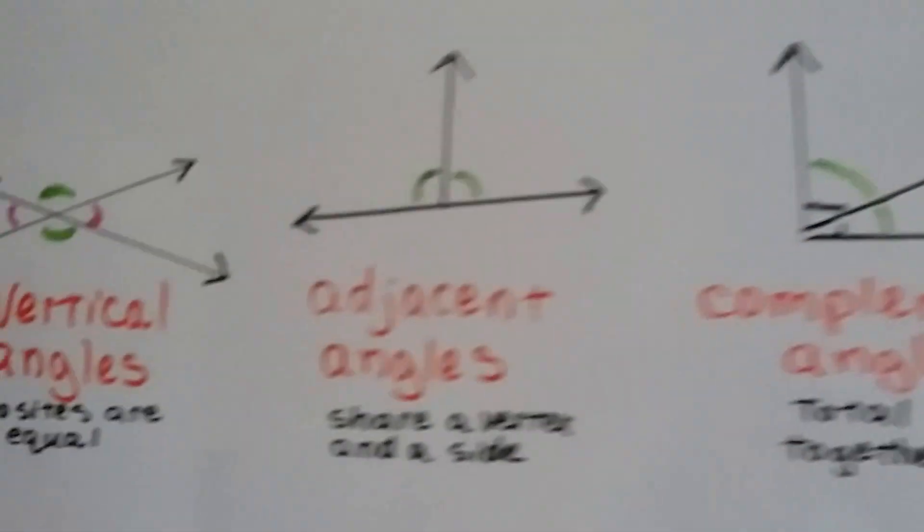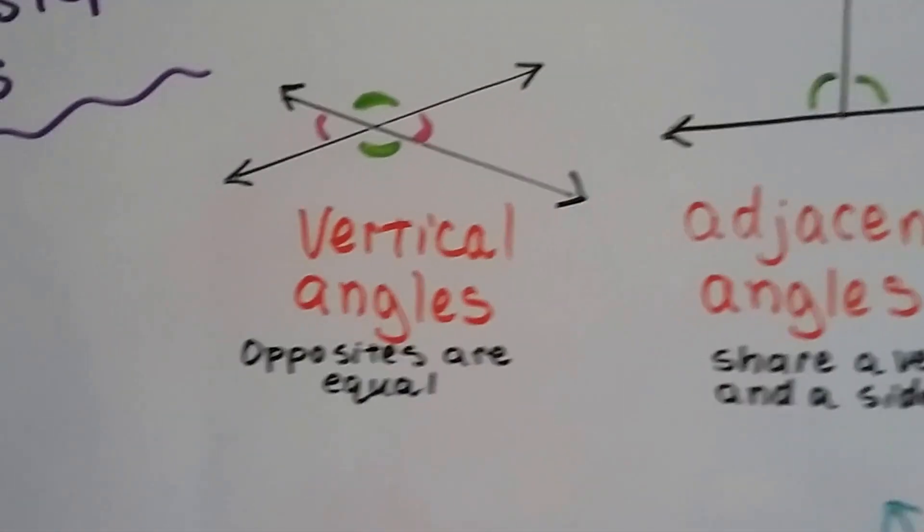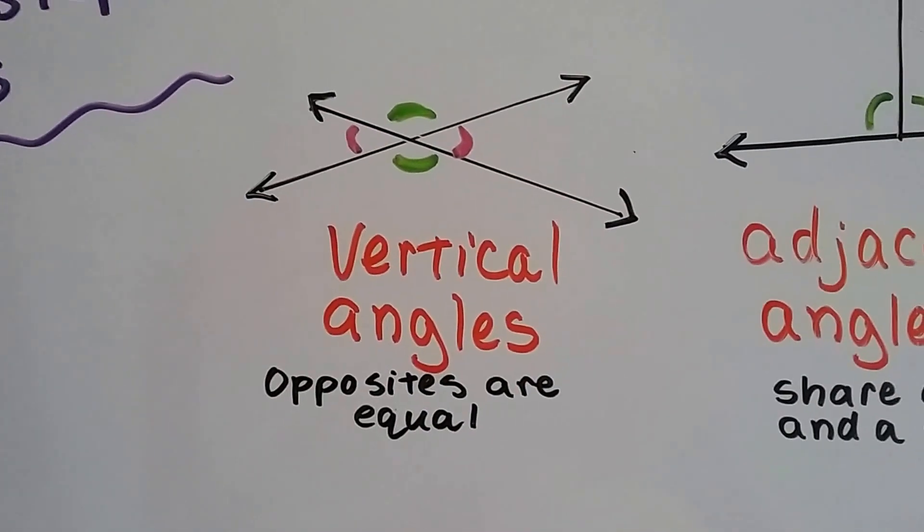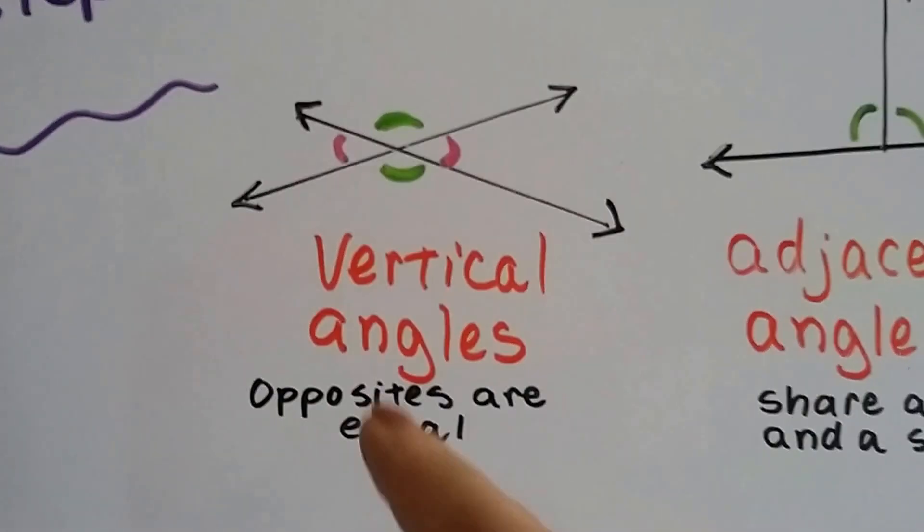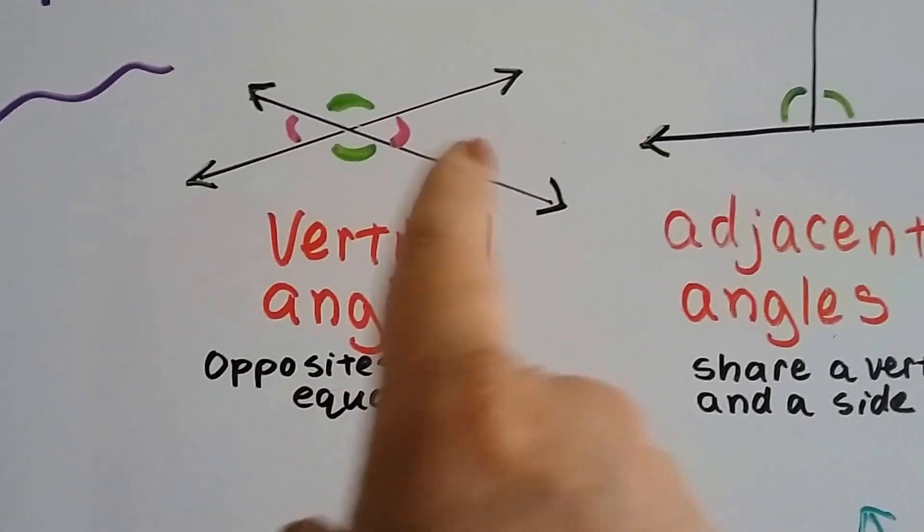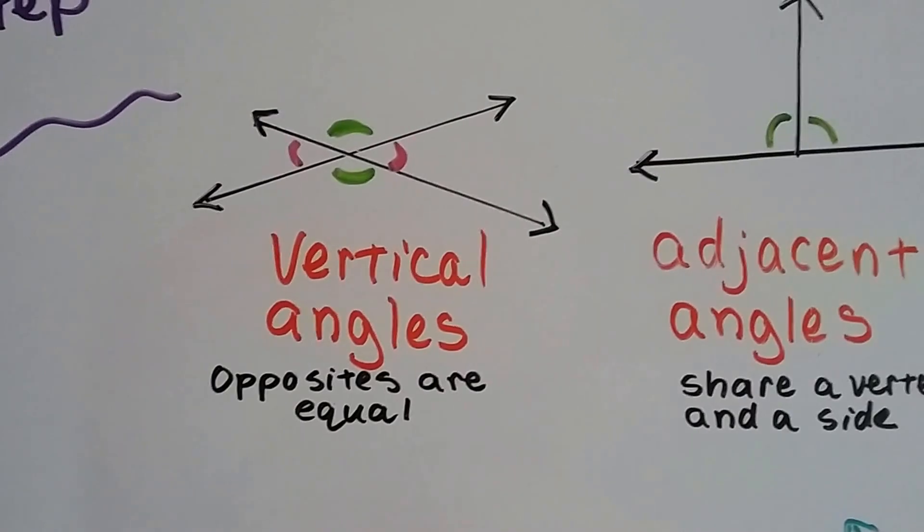As we said in the last video, vertical angles are opposite of each other, and they're equal. They're congruent to each other. So these two green angles have the same measure, and these two pink angles would have the same measure because they're vertical angles to each other.